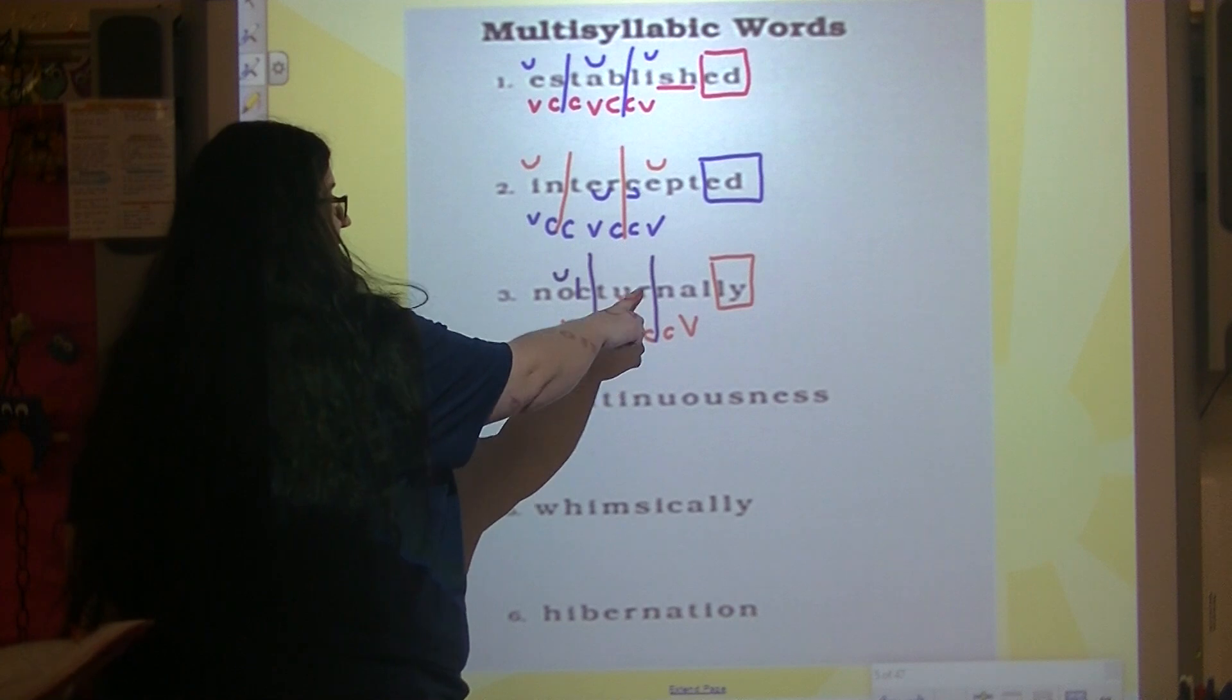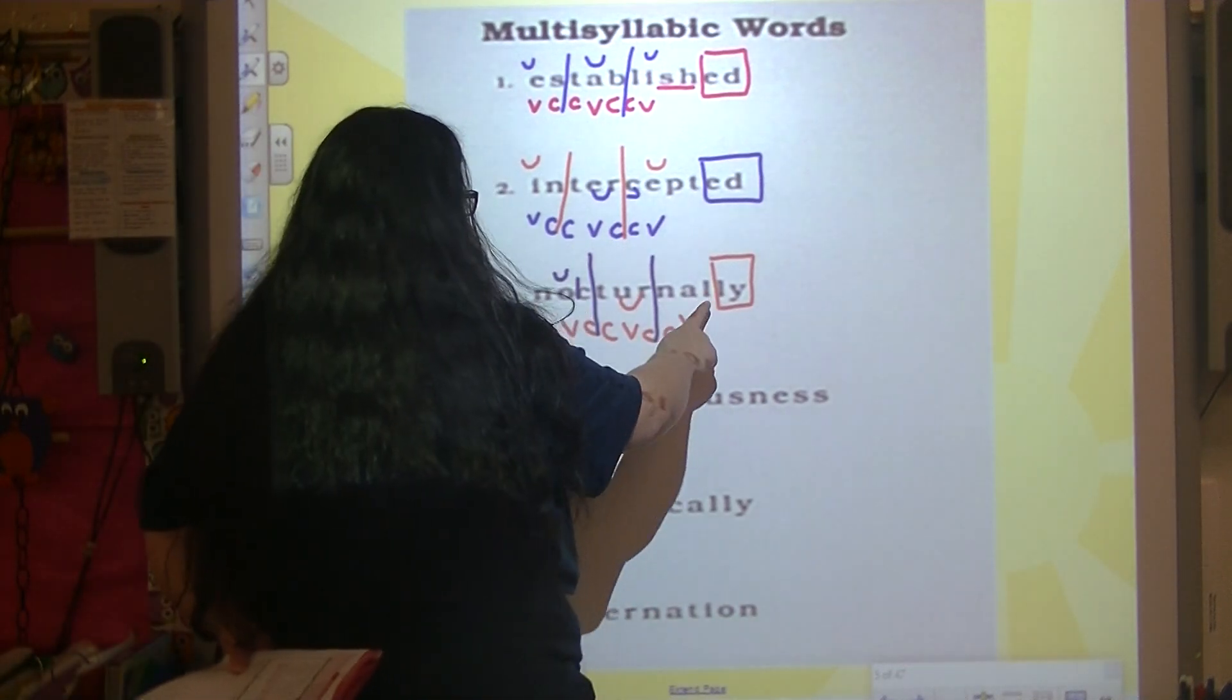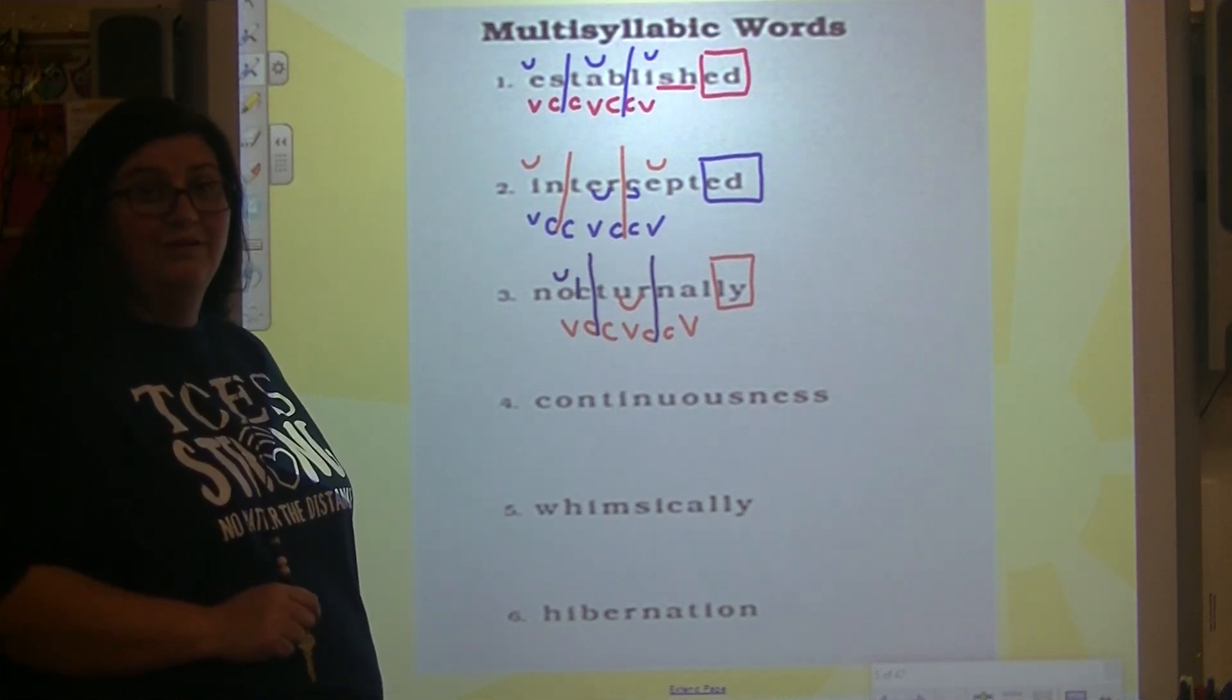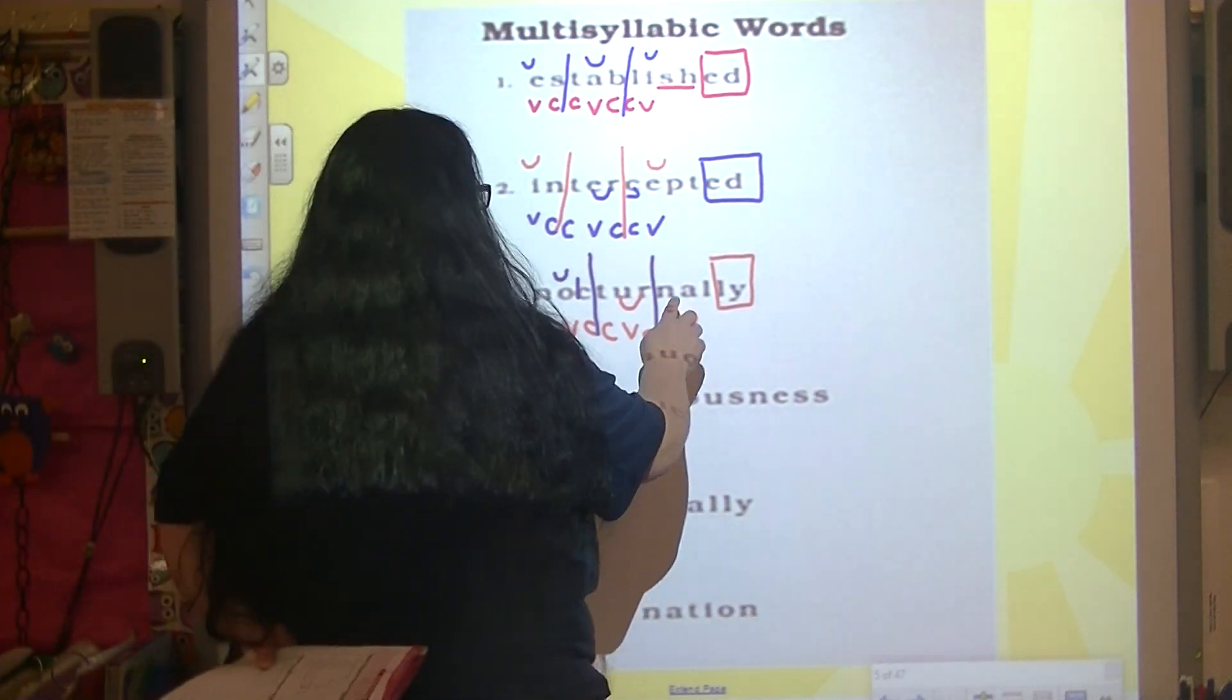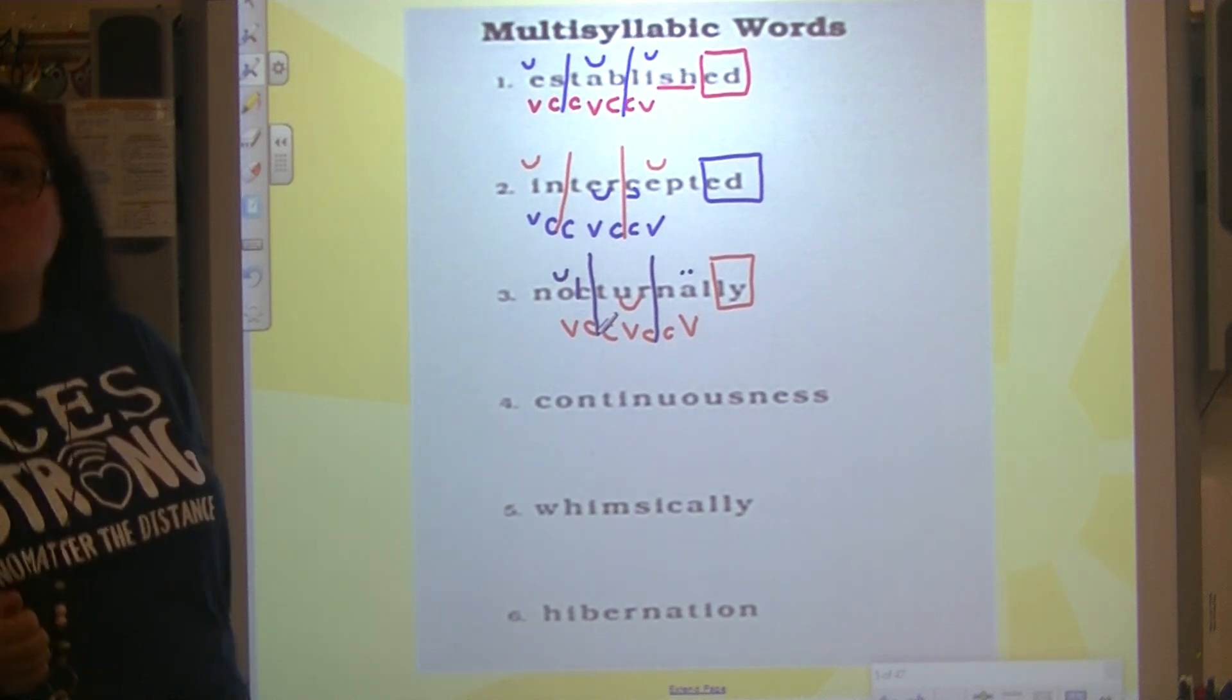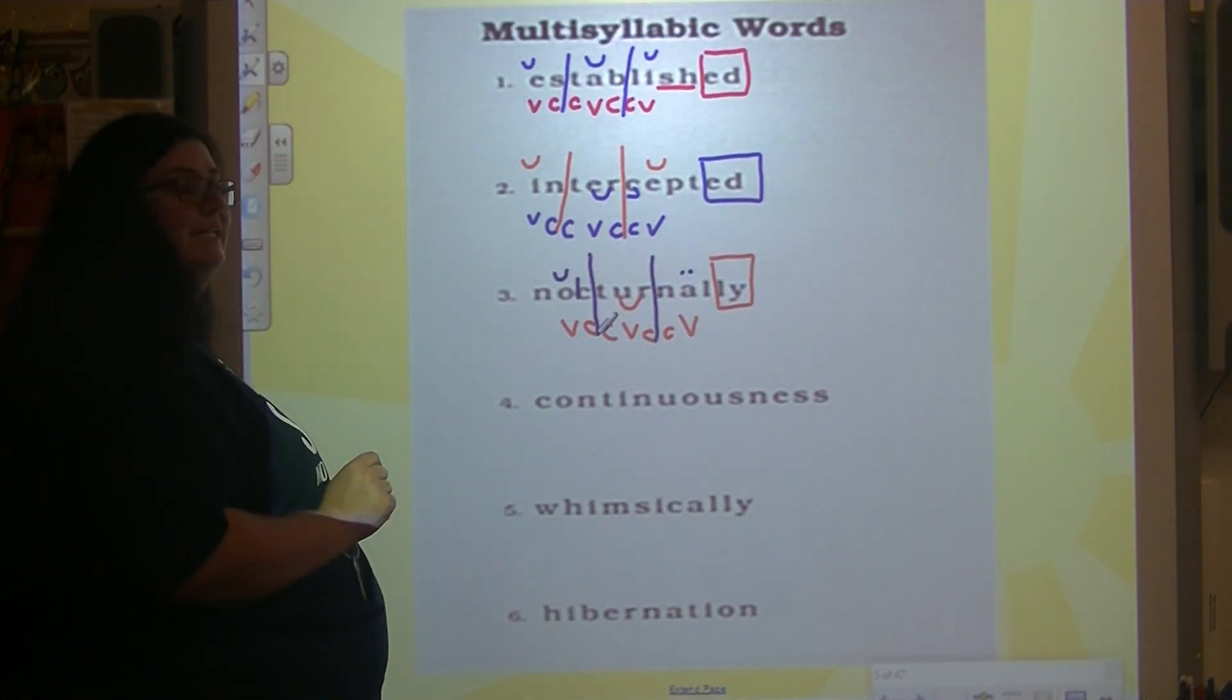Alright, we have the ER sound here. Alright, we have a vowel followed by L, so it usually has the AH sound. We're going to try it. If not, we'll try the schwa sound. See which one makes sense. Alright, let's try it.